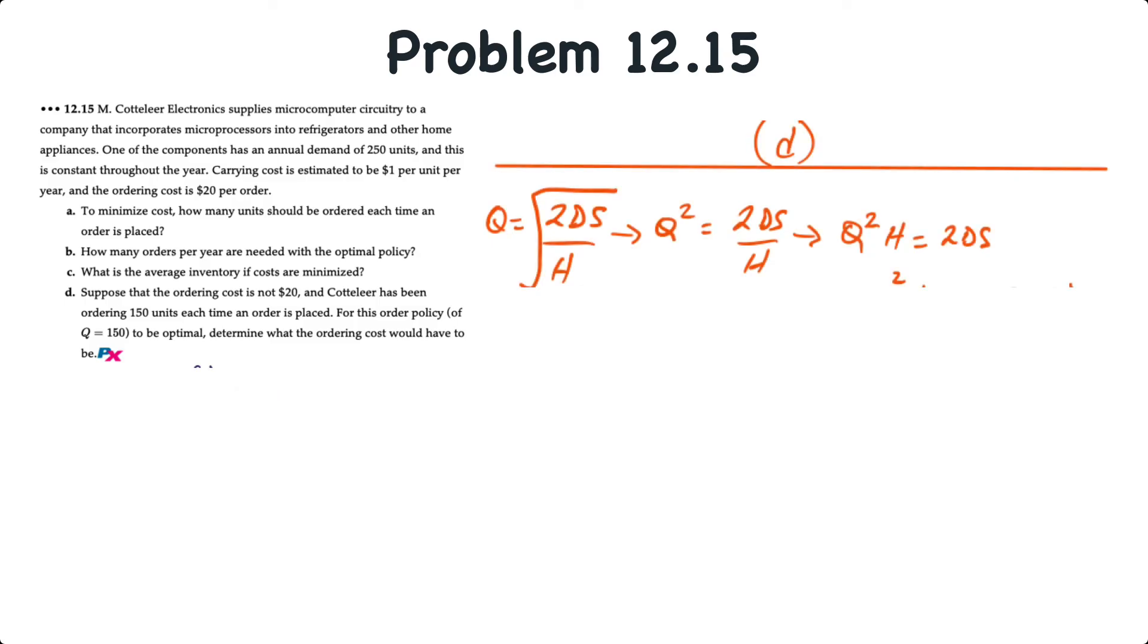And for requirement D, assuming an economic order quantity of 150 units, we need to determine what the ordering cost would have to be. So we're going to have to adapt our EOQ model to isolate S. So knowing that EOQ, or Q, is equal to 2DS over H, we take the square root. Right away, we want to get rid of that square root, so we'll square both sides to give us Q squared to be equal to 2DS over H. If we multiply both sides by H to get rid of the fraction, Q squared times H is equal to 2DS. And now we can isolate S to be equal to Q squared times H over 2D. That's 150 squared times 1 divided by 2 times 250. So that's 22,500 divided by 500 to give us a $45 ordering cost.